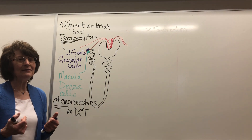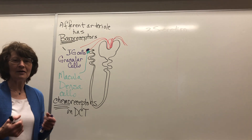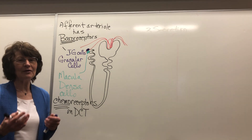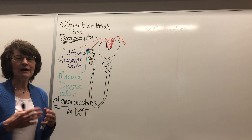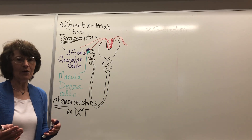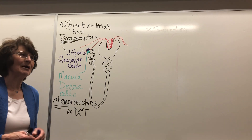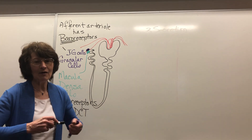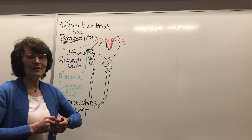What do the kidneys need? Good blood pressure. Where are they close to? The aorta. And so they're going to have good blood pressure, but if by chance the blood pressure is low, what's going to be released? I want you to recall what is released — it starts with an R. It's renin.